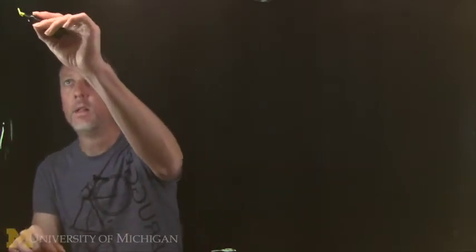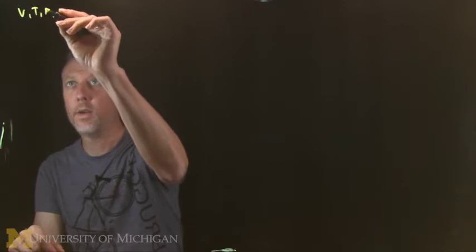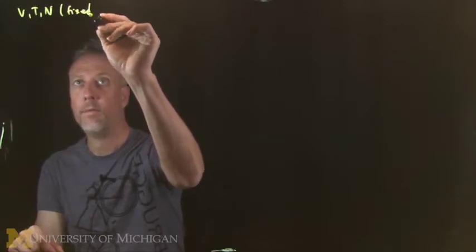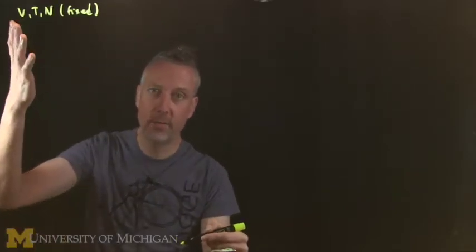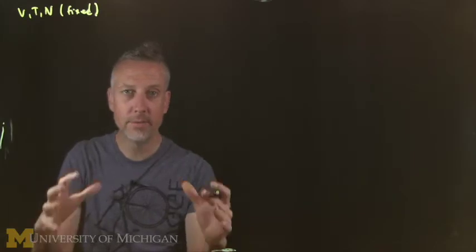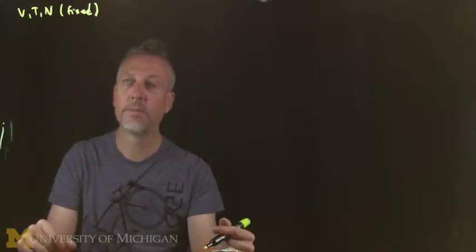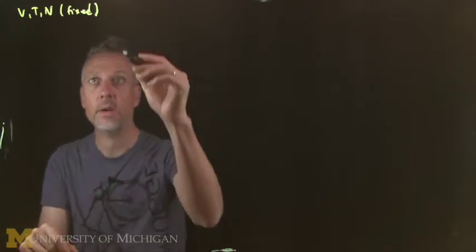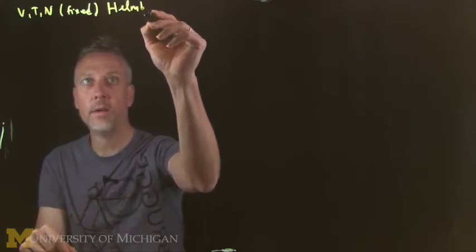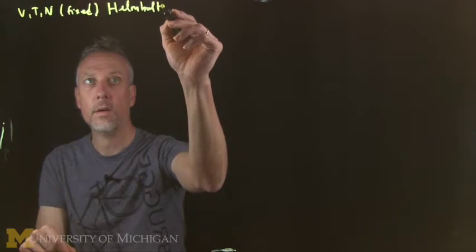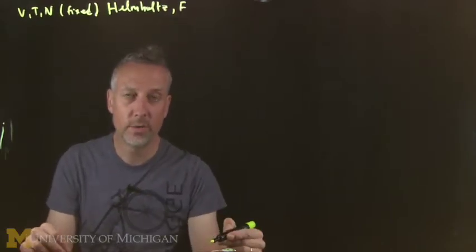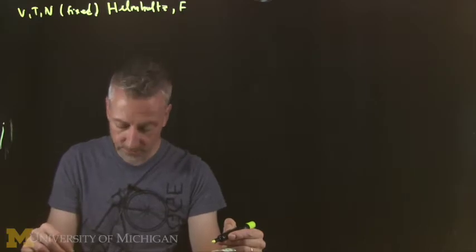Later we will learn that this is called an ensemble, which is that we fix, we have to define some variables to fix. So we're fixing volume, temperature, and number. It's kind of like if you had a fixed box of something at a given temperature. This tells us it's going to be the Helmholtz energy, which is our equilibrium determining thermodynamic potential.